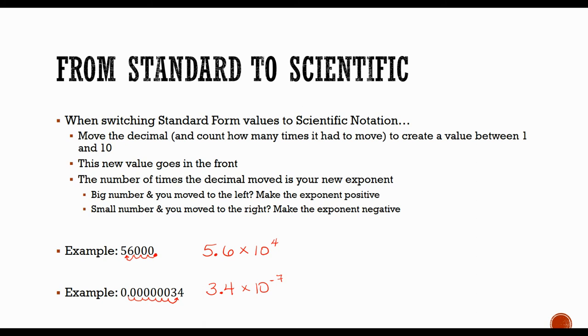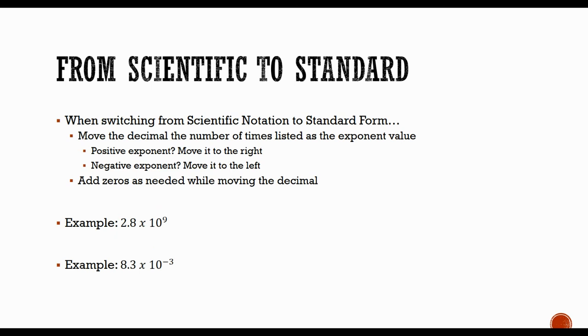Now while we can go from standard to scientific, we can also go the other way. If we are given scientific form, we can switch it to standard form. So if that's the case, keep in mind, we're going to start this time with our exponents. We're going to move our decimal that many number of times. If it's positive, we're going to move to the right. If it's negative, we move to the left. And we're going to just fill in zeros as we need so that way we have all of our spots taken care of.